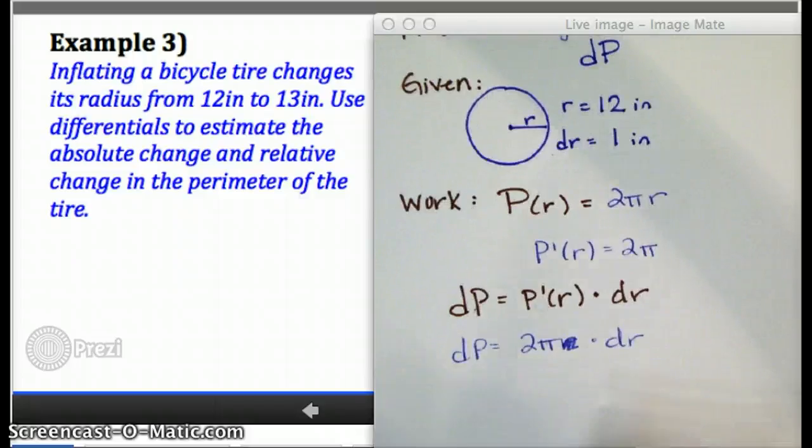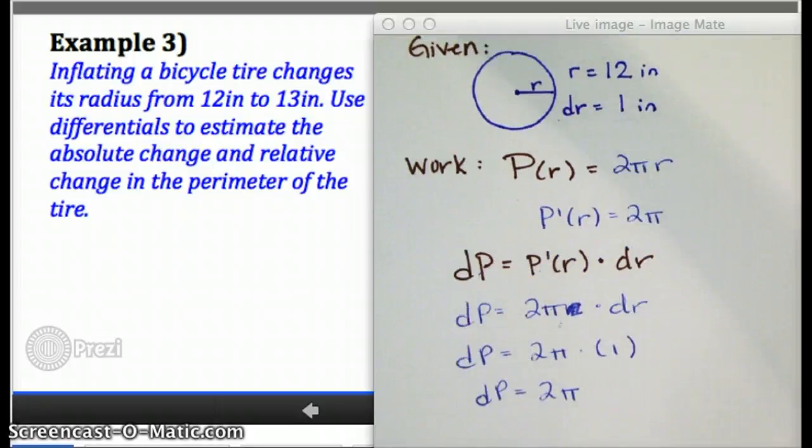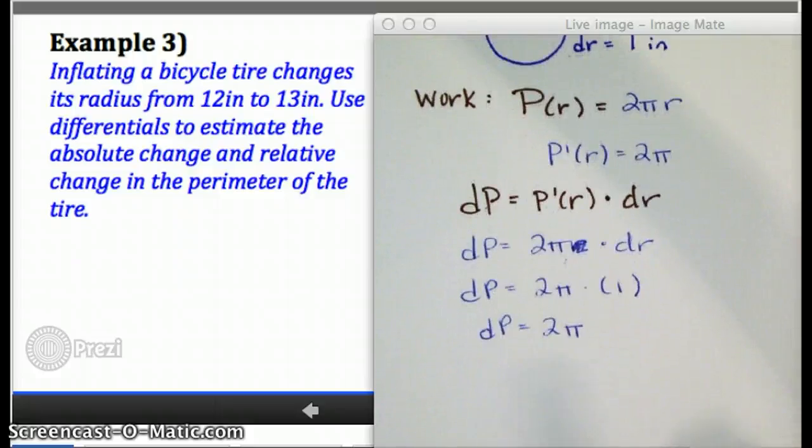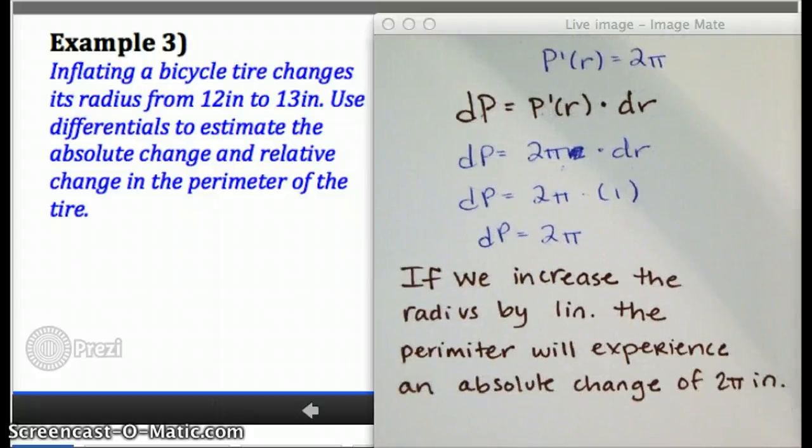The next step is to plug in. Usually we would plug in for r and for dr, but this function expression doesn't have an r in it, so really all I need to plug in is dr. And we end up with dp equaling 2π. You do need to end with a sentence. What does 2π tell us here?